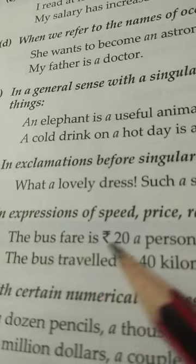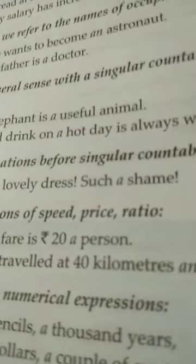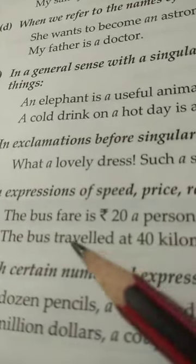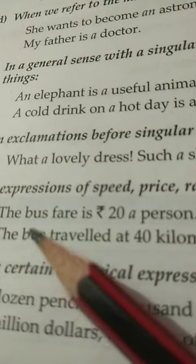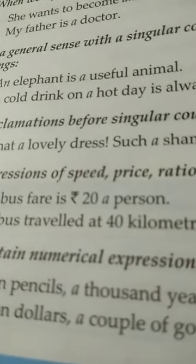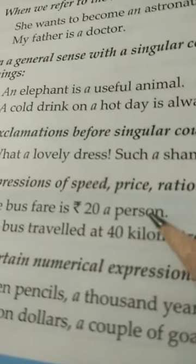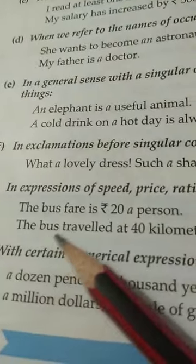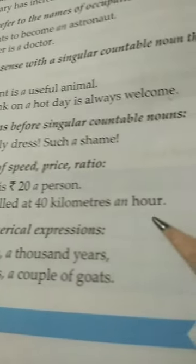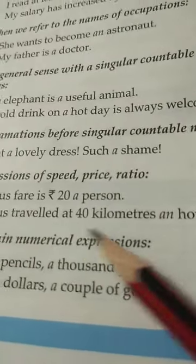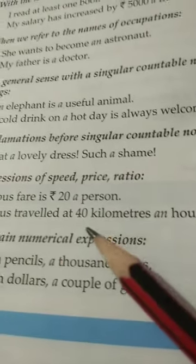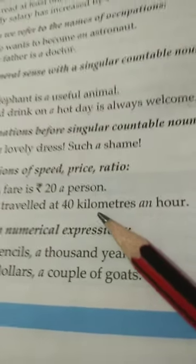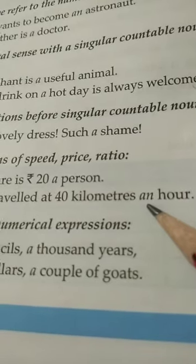Next condition: indefinite article is used in expressions of speed, price, or ratio. See the example: 'The bus fare is rupees 20 a person' — here we are talking about price. Second example: 'The bus travels at 40 kilometers an hour' — here the speed of the bus is mentioned, so we use the indefinite article 'an' before 'hour'.